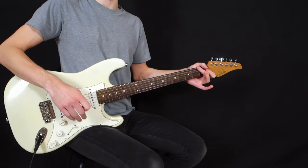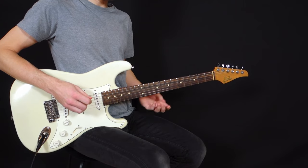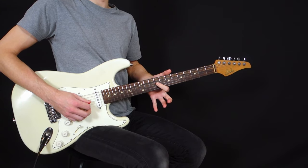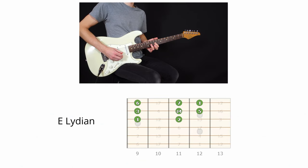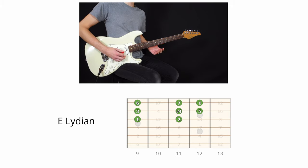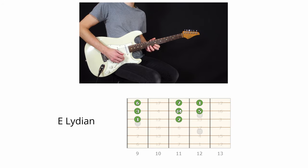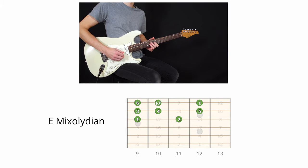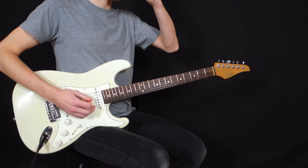Now you need to learn all of these scale positions starting from the note E. Starting with Lydian, the note E here is on the ninth fret of the third string. Then we have Aeolian, then Lydian again, and then Mixolydian. So you can improvise, changing the mode and the scale every time.